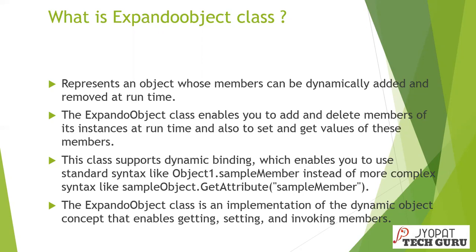If you want to change the behavior of the object during runtime, you can use the ExpandoObject class. It enables you to add and delete members of its instances at runtime, and also to set and get values of these members. This class supports dynamic binding, which enables you to use a standard syntax like object1.sampleMember instead of more complex syntax like sampleObject.GetAttribute("sampleMember").